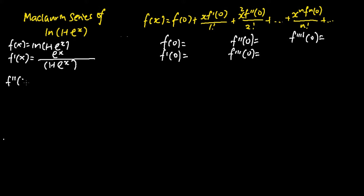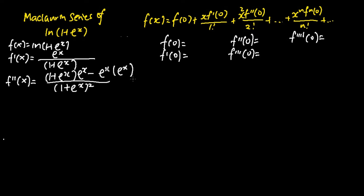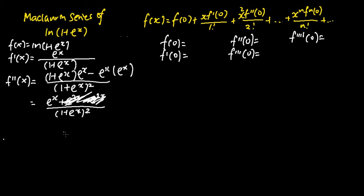Next, I will find f''(x). In my denominator I will square (1 + e^x), and in the numerator I apply the quotient rule: (1 + e^x) times the derivative of e^x, which gives e^x, subtracting away e^x times the derivative of (1 + e^x), which gives e^x. Simplifying the numerator, I get e^x + e^(2x) minus e^(2x), which reduces to just e^x over (1 + e^x)^2.